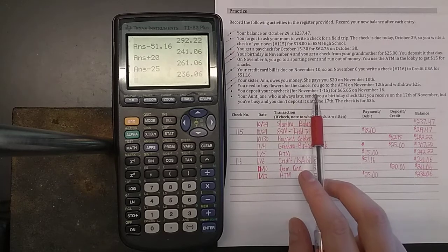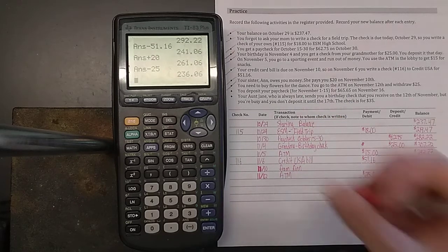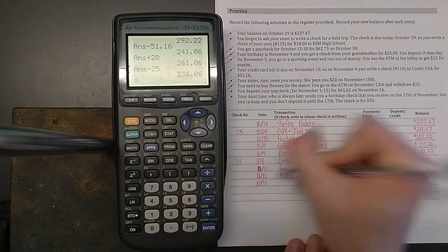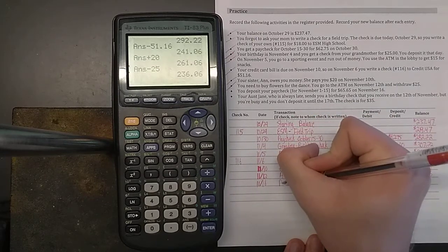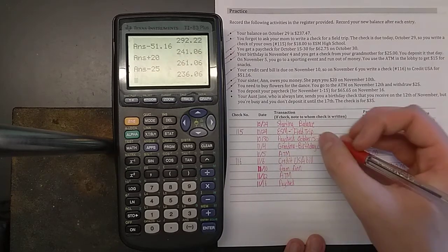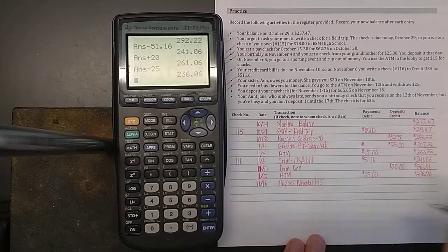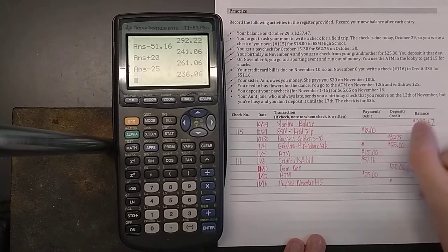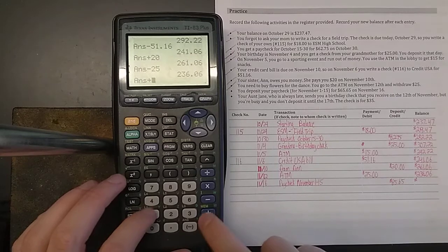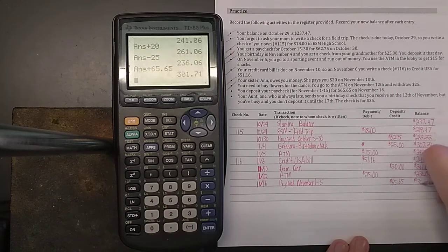You deposit your paycheck for November 1st through the 15th for $65.65 on November 16th. So paycheck, November 1st through the 15th. This is money coming into your account. So that's $65.65. You add that to your previous balance. Your balance now should be $301.71.